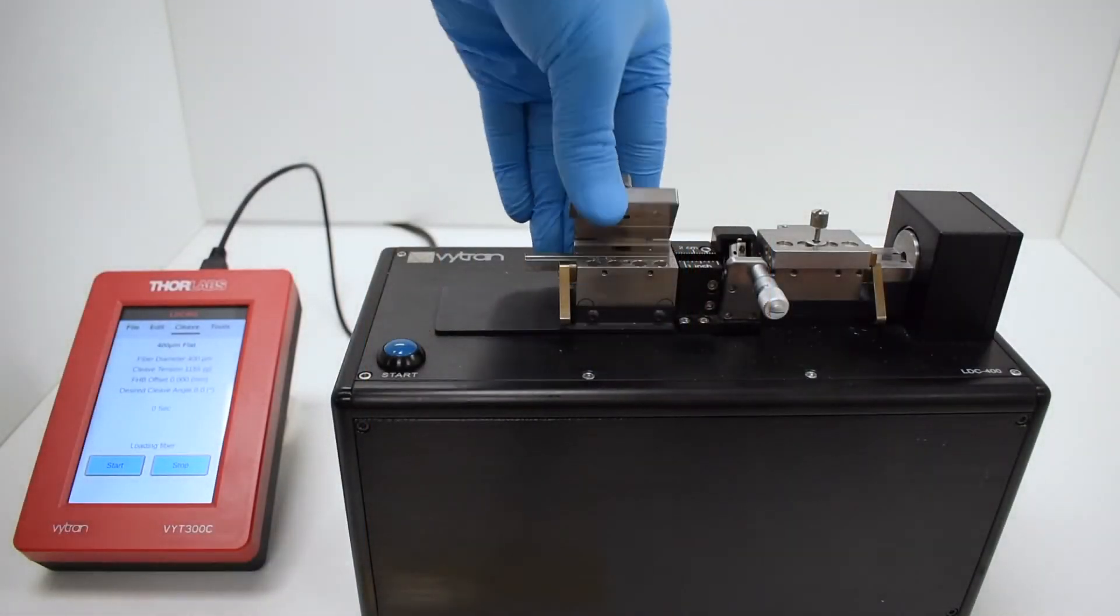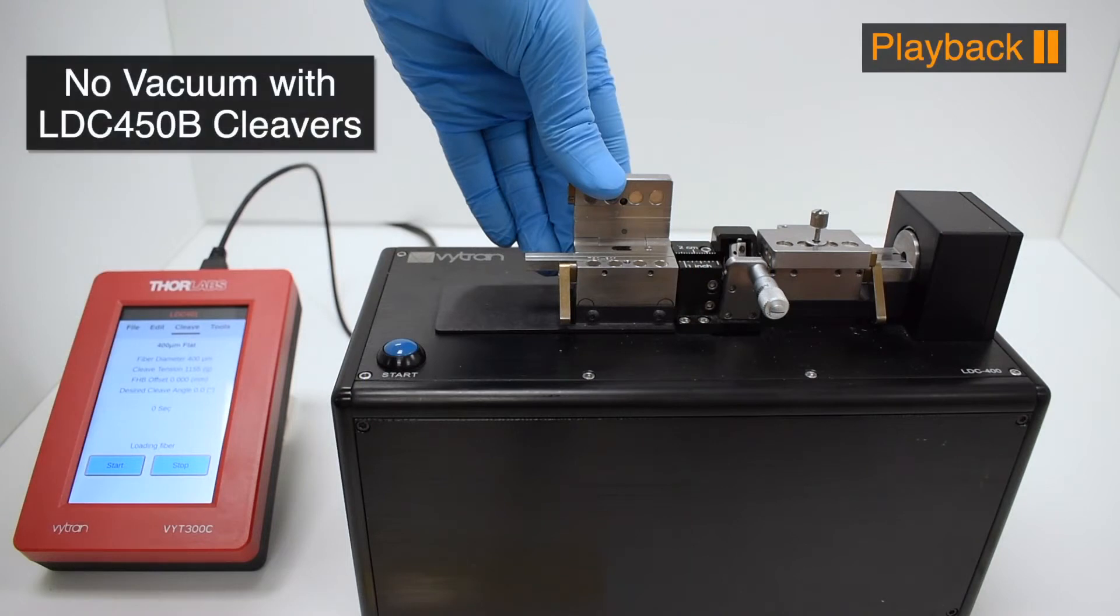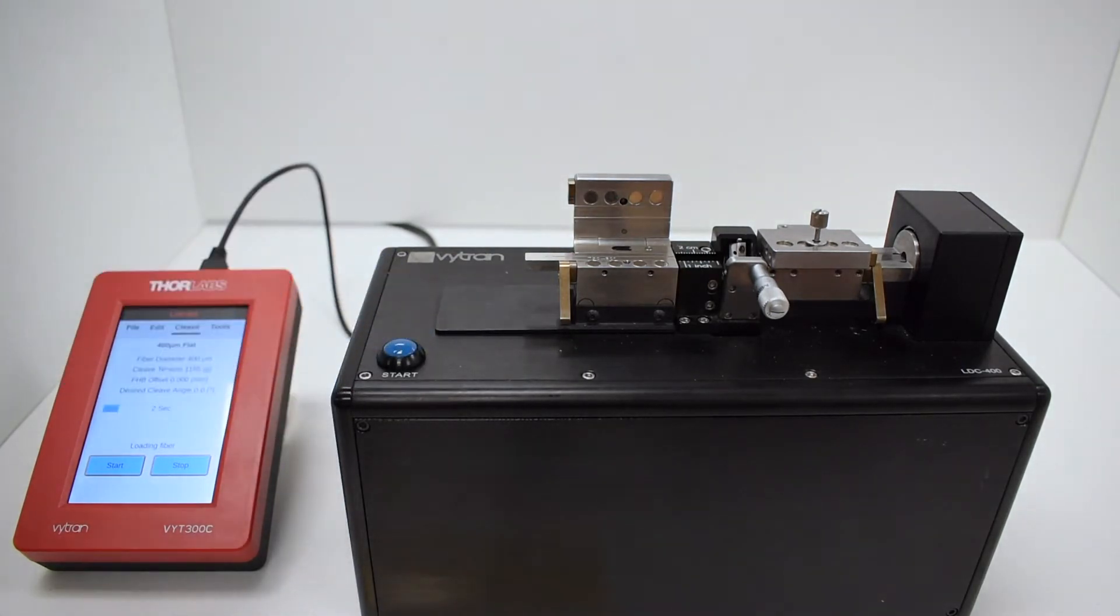Open the fiber holding block lids. When the left lid is opened, the vacuum will turn on if this is enabled for the cleave file. It will stop automatically at the end of a timer, or you can press the start button to interrupt it.